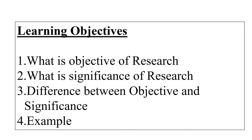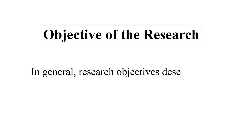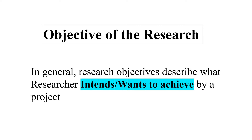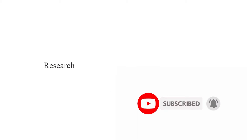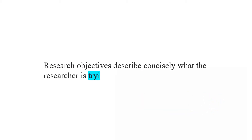So let's begin. Objective of the research: in general, research objectives describe what the researcher intends or wants to achieve by a project. More commonly, we can say research objectives describe concisely what the researcher is trying to achieve — what the researcher basically aims to achieve from a particular project or research.